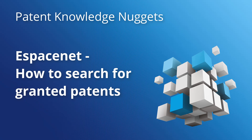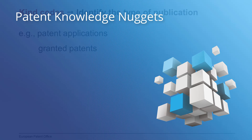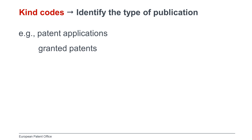Hello everyone, my name is André Lahaye. In this video, I would like to show you how to search patent documents from a specific country or from a regional patent authority at a certain stage of the patent prosecution, for example, granted patents. To identify these publications, for example, published applications or granted patent publications, patent authorities use kind codes.